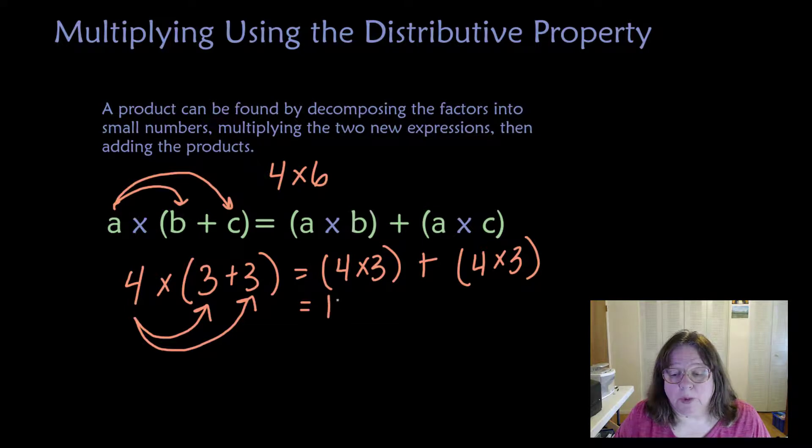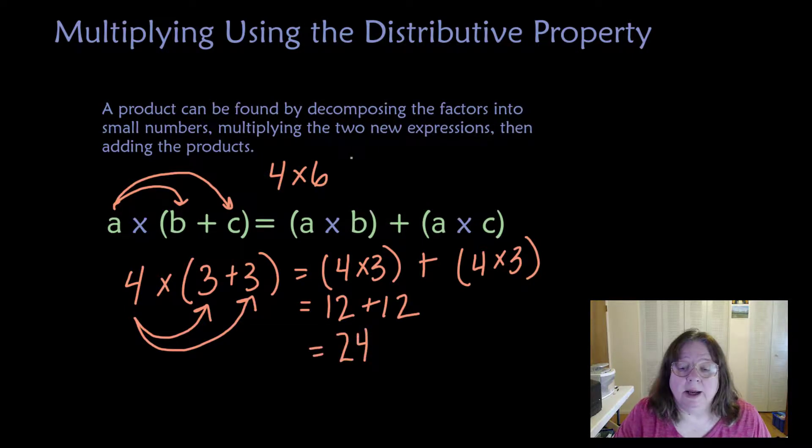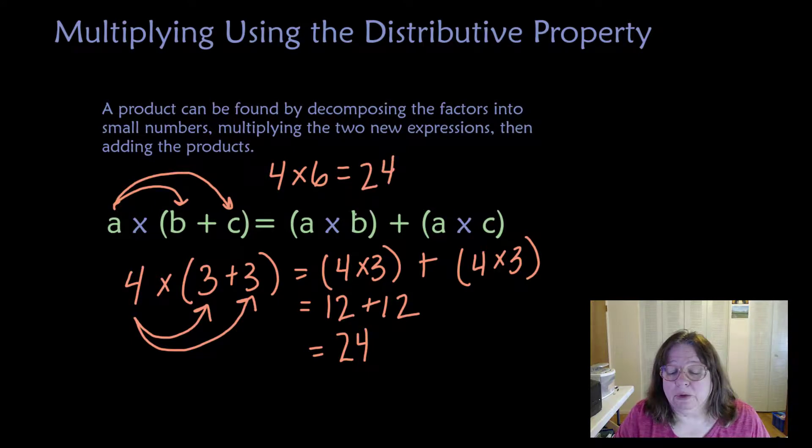Well, 4 times 3 is 12, and we just did it. 4 times 3 is still 12, so the answer is 24. And those of you that know your multiplication facts, you knew that 4 times 6 was 24 already. We just proved that the distributive property works.